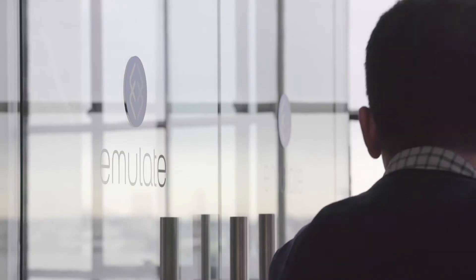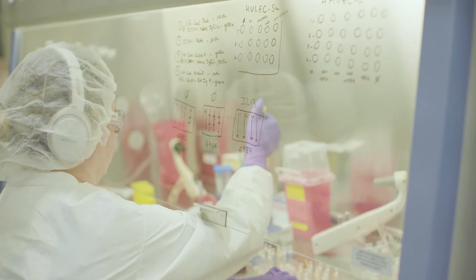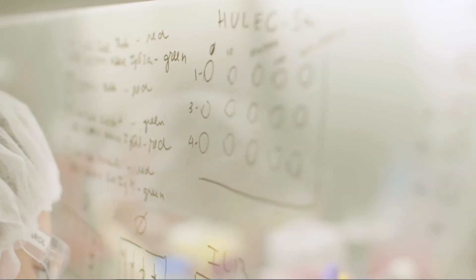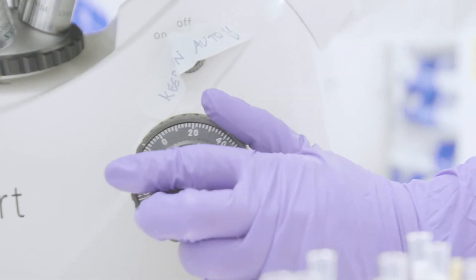Right now when we're developing drugs, we have two tools at our disposal: animal testing or cells in dishes. Because animals aren't humans, they're often failing to predict how humans will respond to drugs. And because the cells in dishes don't work like they do in the human body, they're not very predictive either.